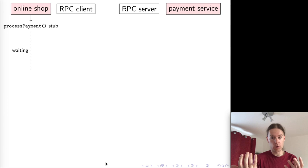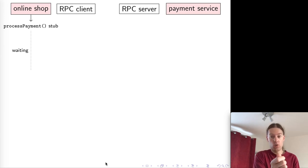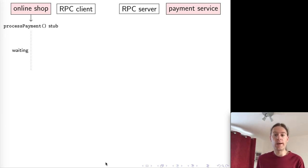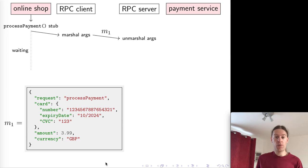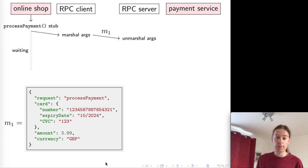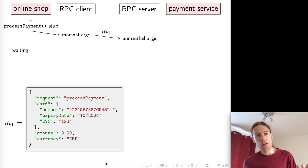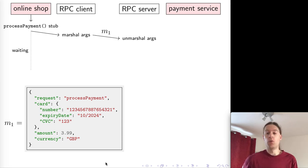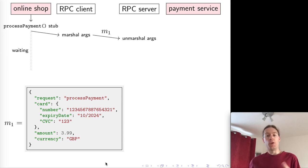The stub function doesn't actually process the payment — instead it sends a message to the service which does process the payment. The online shop calls into this stub and the RPC client takes the arguments passed to that function and translates them into a message that can be sent over the network. This translation process from arguments in your programming language to a message over the network is called marshalling, or encoding. It encodes the function arguments — for example as JSON or some binary format — into a sequence of bytes that can be packed into a message and sent over the network.